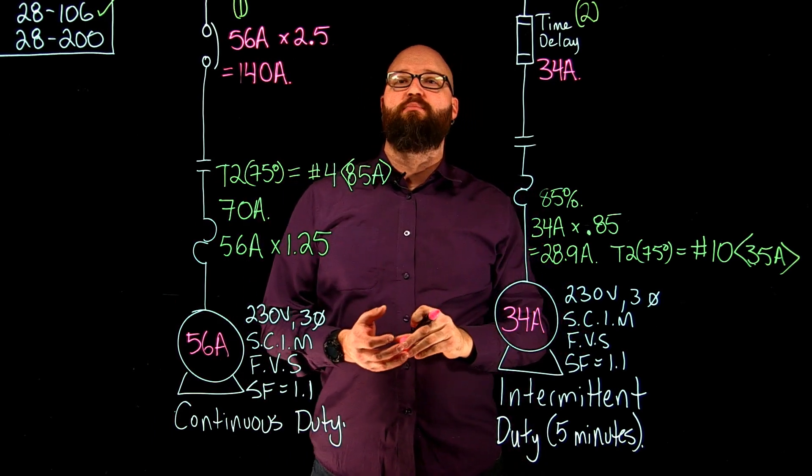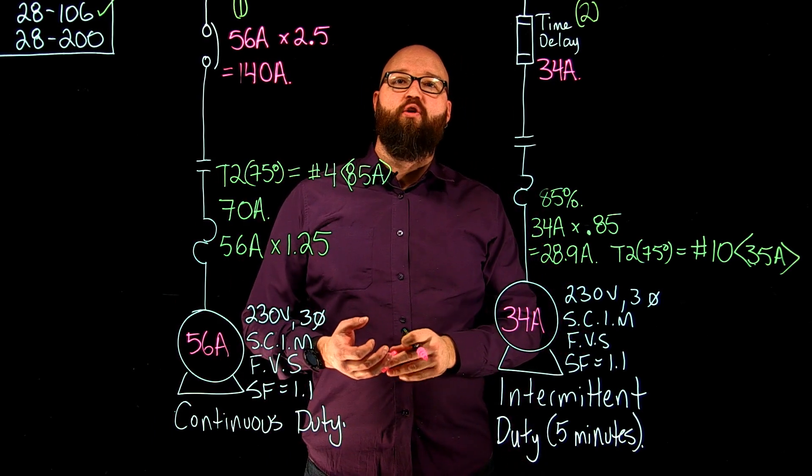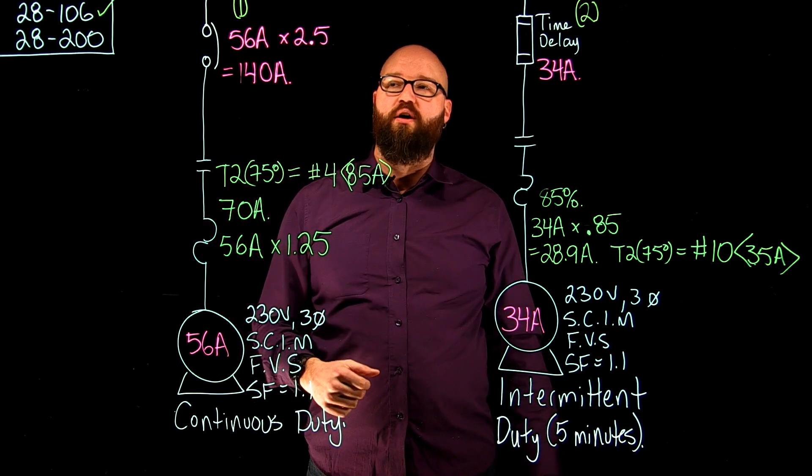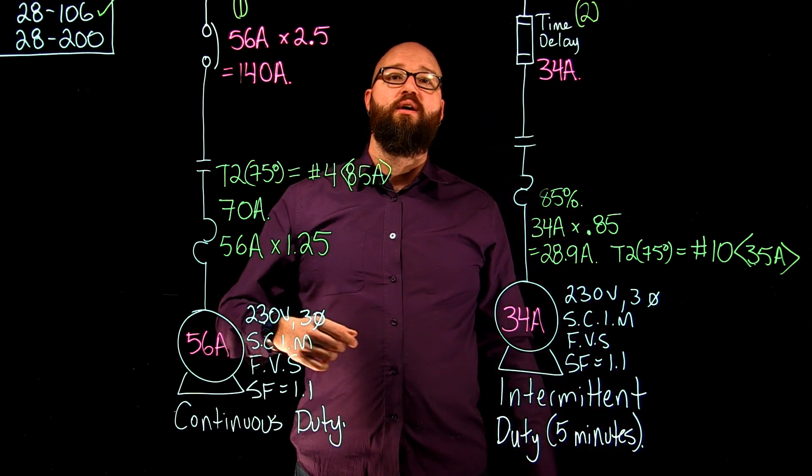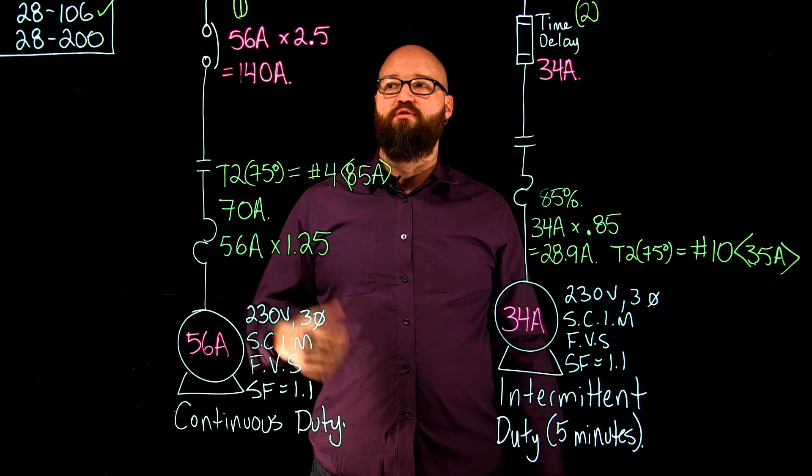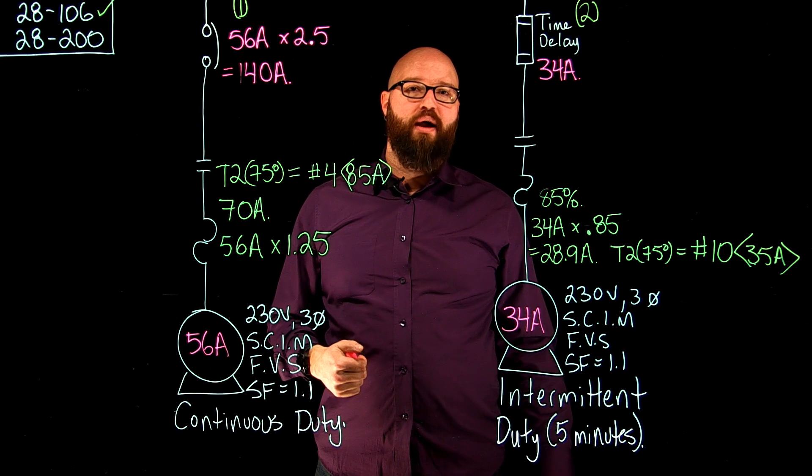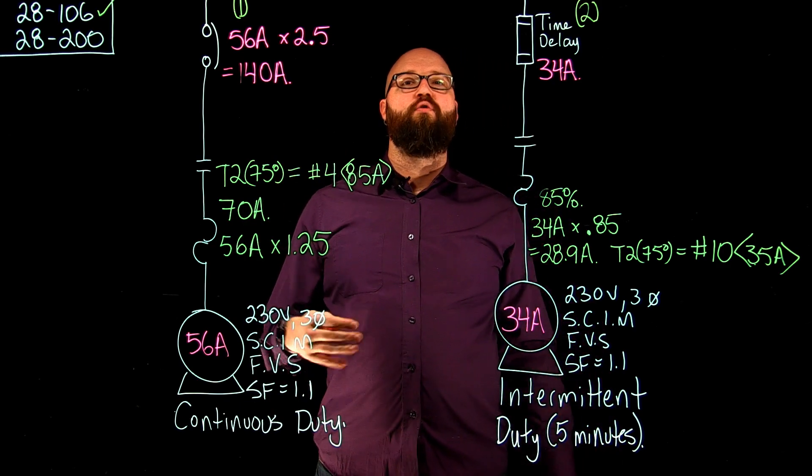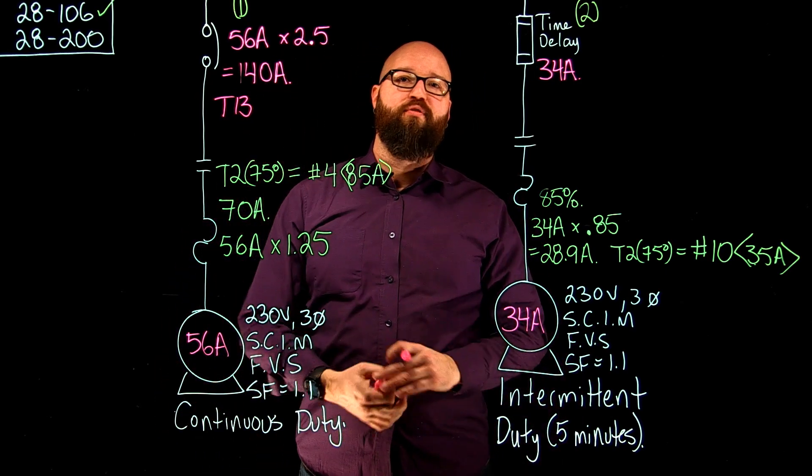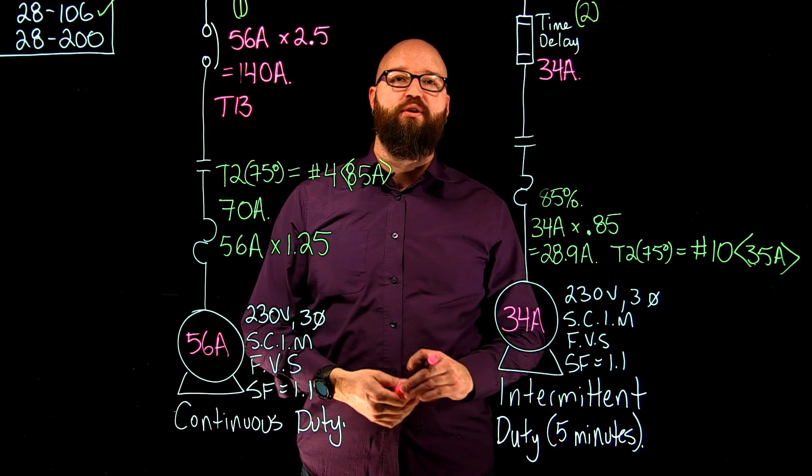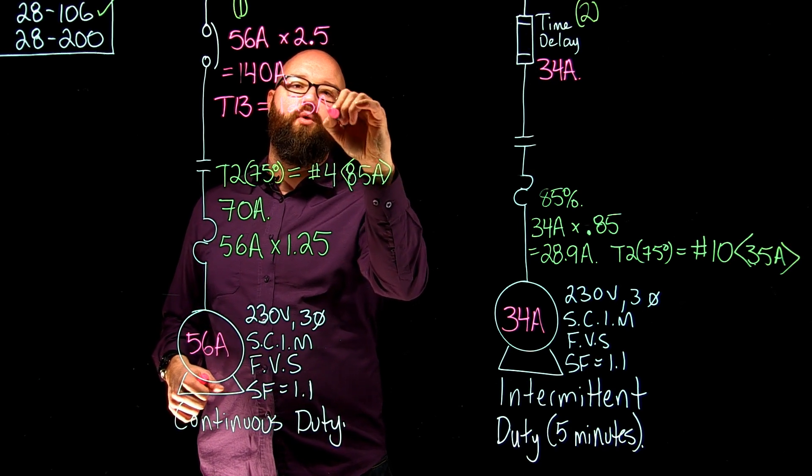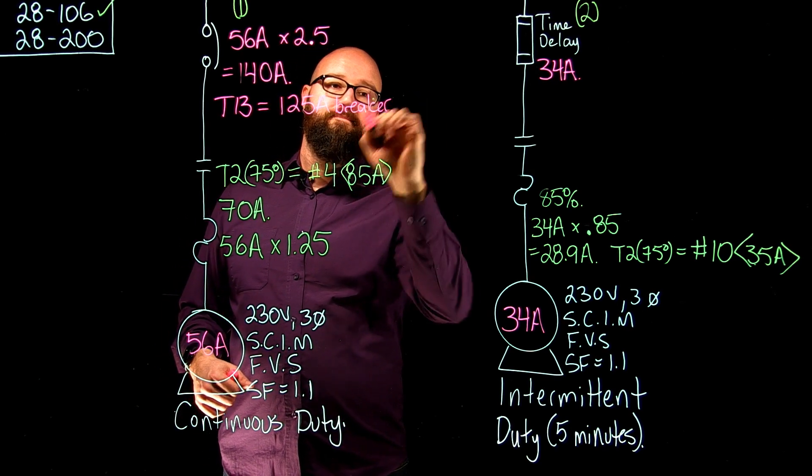That is the absolute maximum setting that my overcurrent device could be. Imagine for a second that you can actually dial that thing up. The highest you could go is 140 amps, because it tells me in 28-200 I cannot exceed the values from table 29. So once I do that calculation, 140 amps is my absolute max. We're going to go to table 13 to select an overcurrent device. From table 13, there is no 140 amp overcurrent device, and it tells me that I can't exceed the value. So we're going to go down to the next available size, which on table 13 tells me a 125 amp breaker.